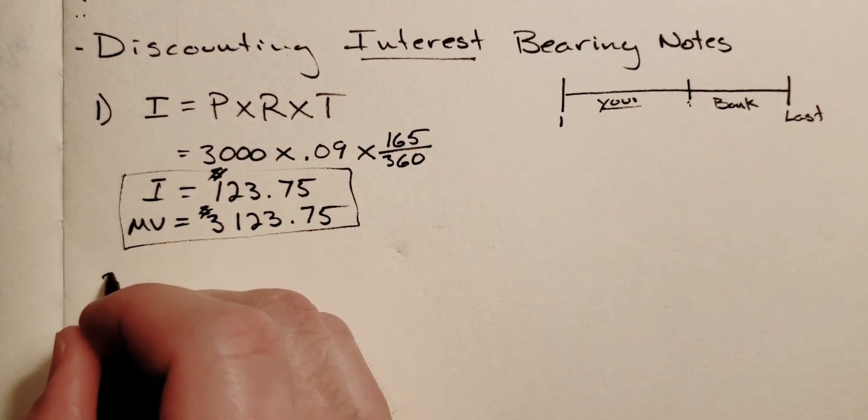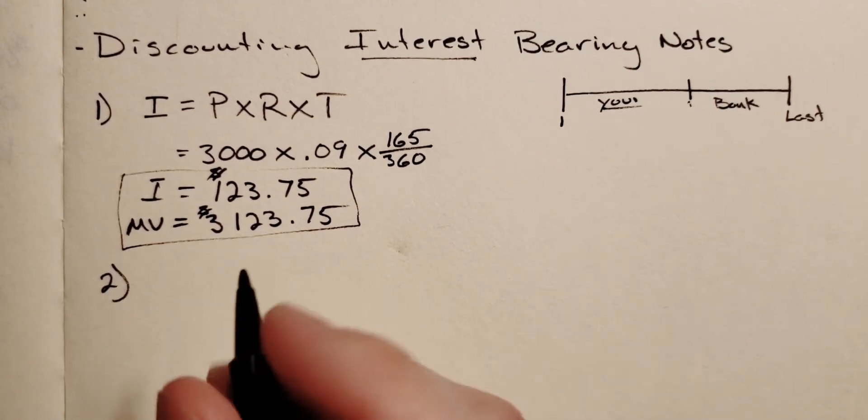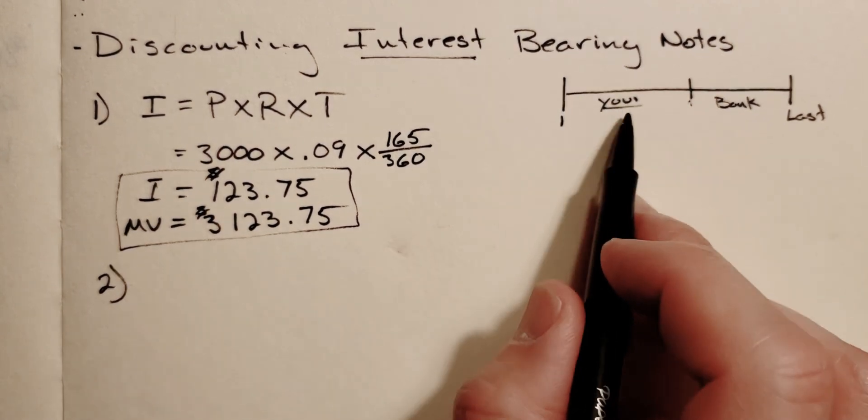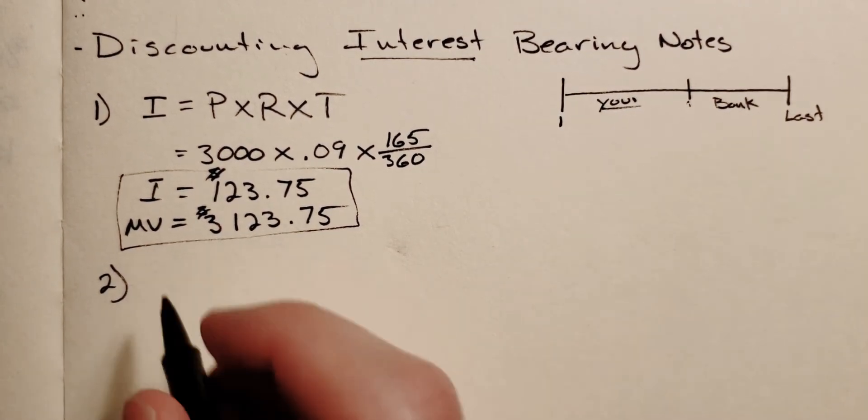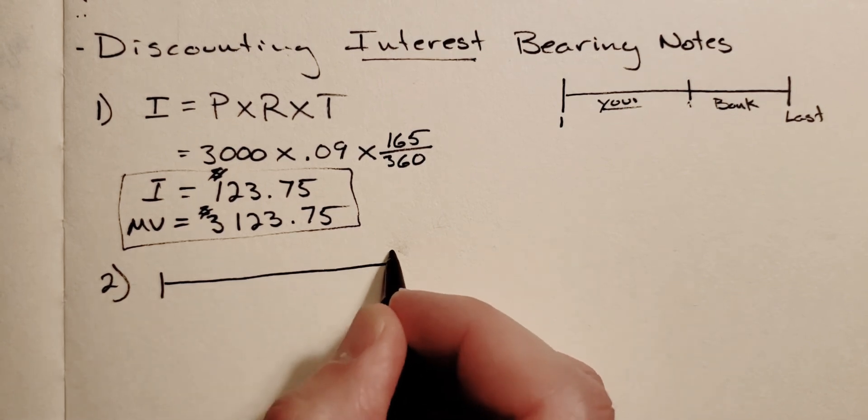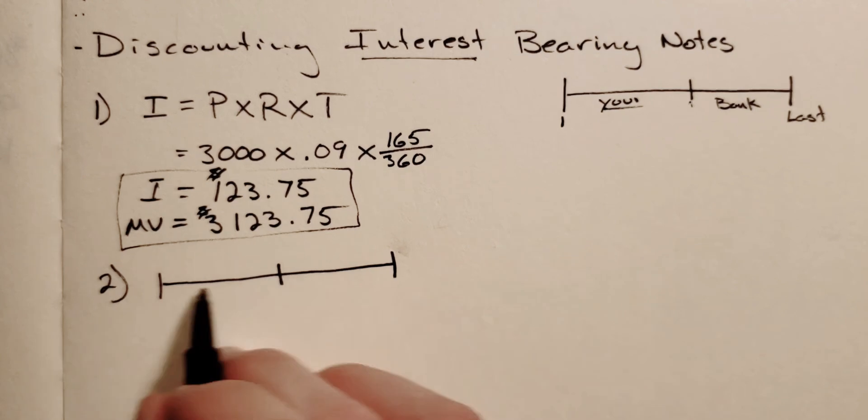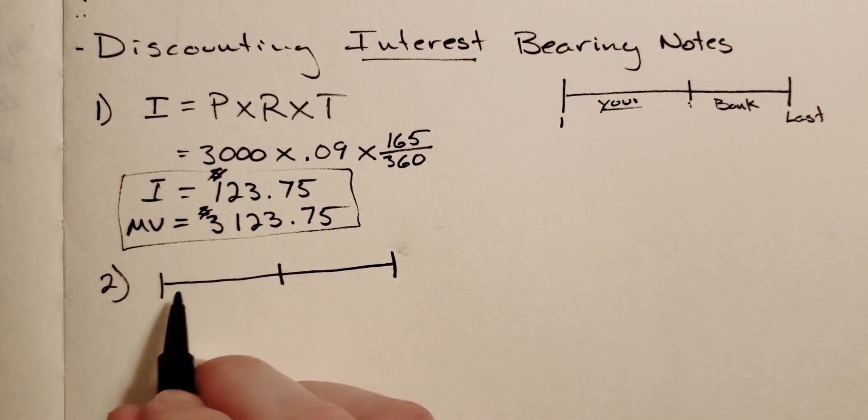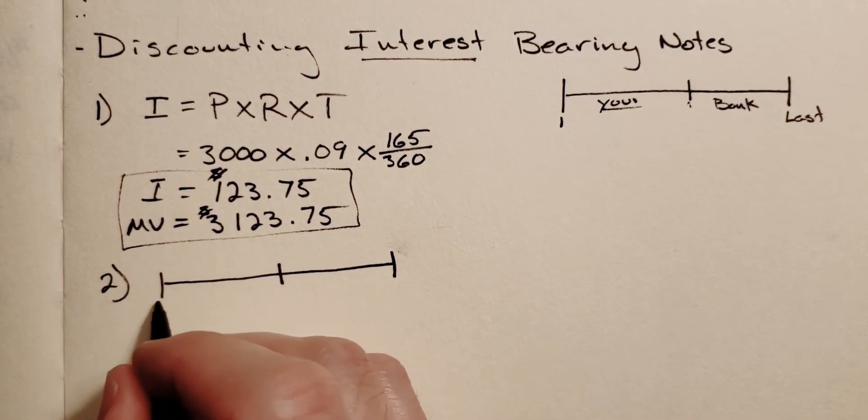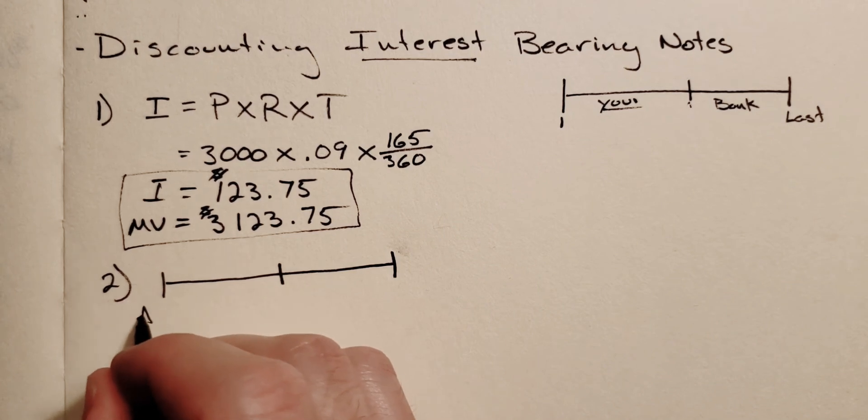Now for step number two, this is where it gets a little interesting where we have to calculate how long you held the note and how long the bank held the note. So this is where some dates are going to come in, and it's going to be helpful if you have your calendar. So I'll just draw a generic timeline here, and the date of the note would be our first date, and that's going to be April 8th.